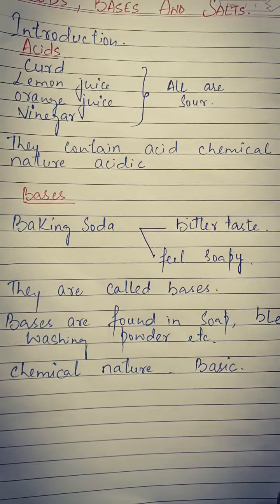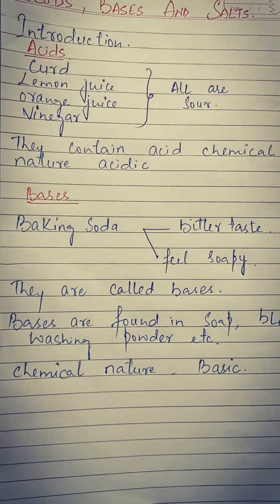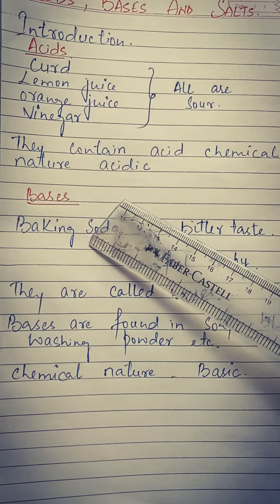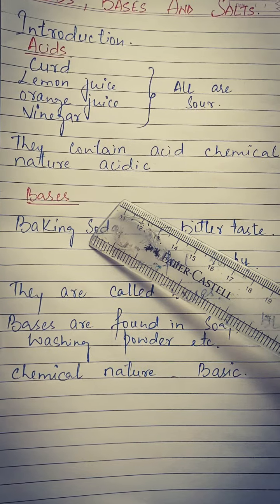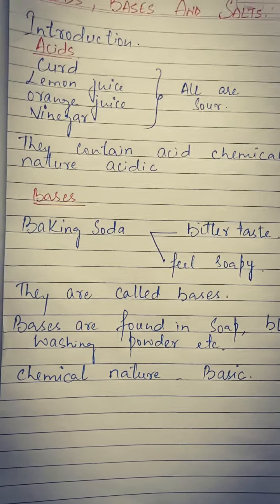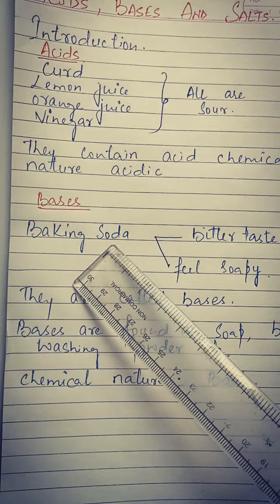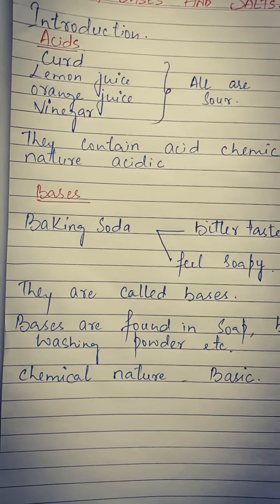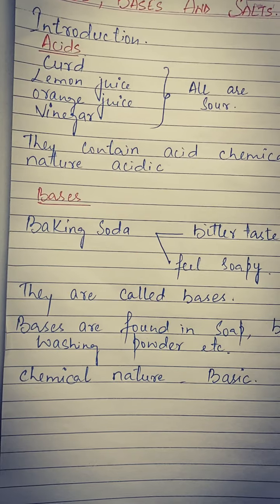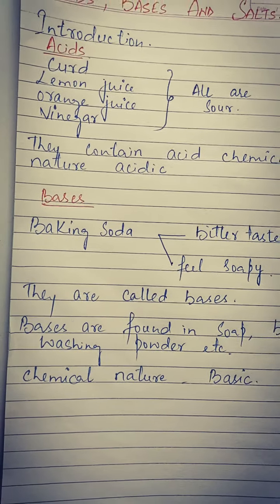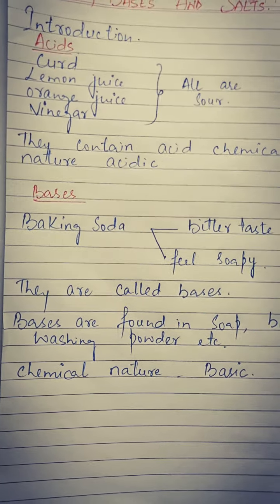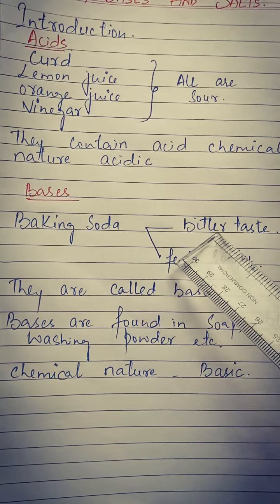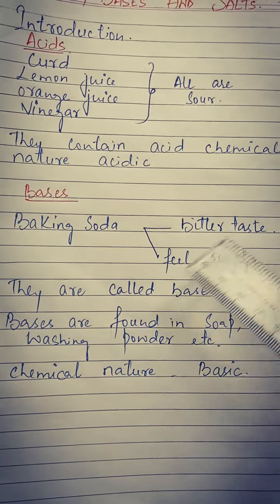उसके बाद जो next topic है, that is bases. Bases भी एक ऐसे substances हैं जिनका जो टेस्ट होता है वो bitter होता है, यानि कड़वा होता है। For example, baking soda है। जैसे हम baking soda लेते हैं जो घर में इस्तमाल आता है — जैसे नमकीन चाय में डालते हैं, या कोई रोटियां बनाते हैं — जो bakery वाले होते हैं वो उसको इस्तमाल में लाते हैं।